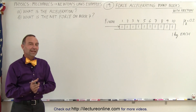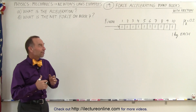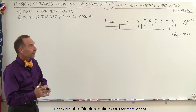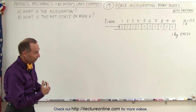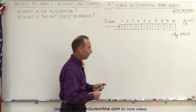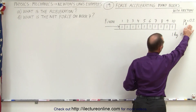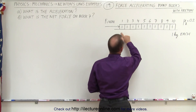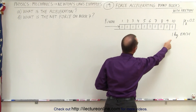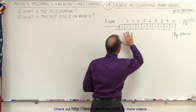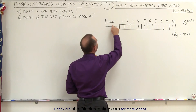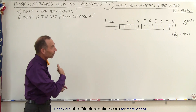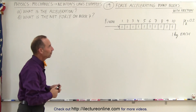Welcome to ElectronLine. We've complicated the problem just a little bit by adding friction. We have the coefficient of kinetic friction now equal to 0.2. The blocks are still 1 kilogram each, and there are 10 of them. Of course, we need a little extra force now to also overcome the friction.